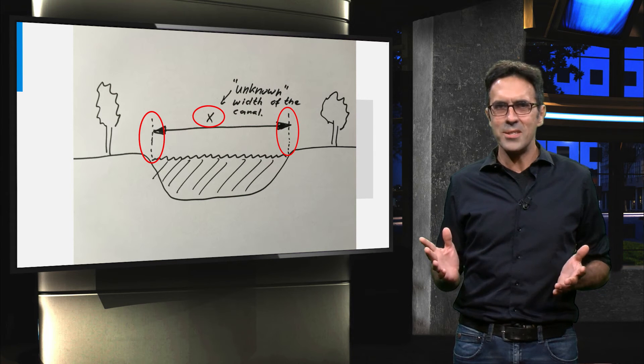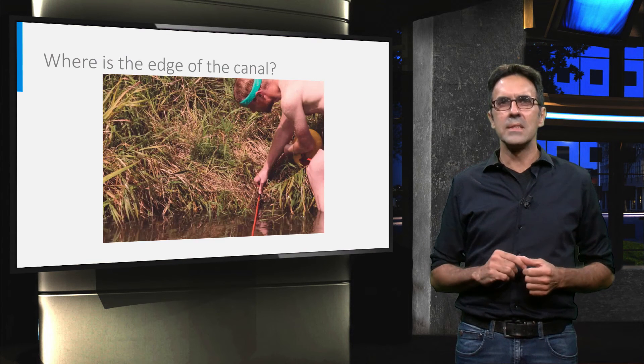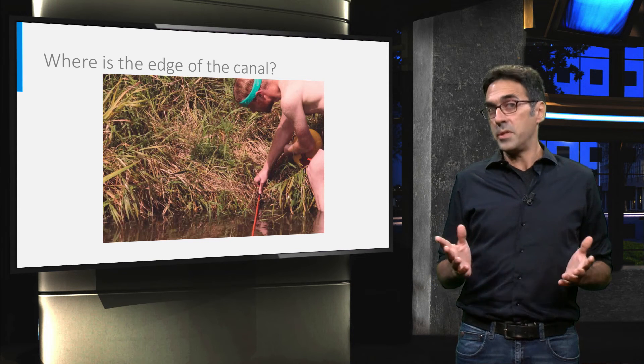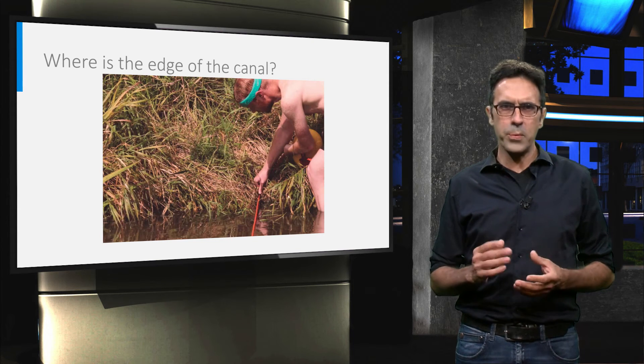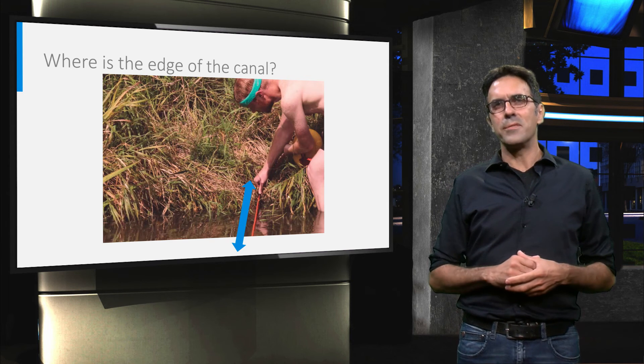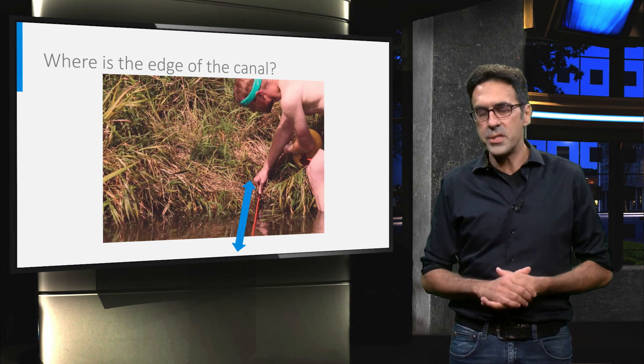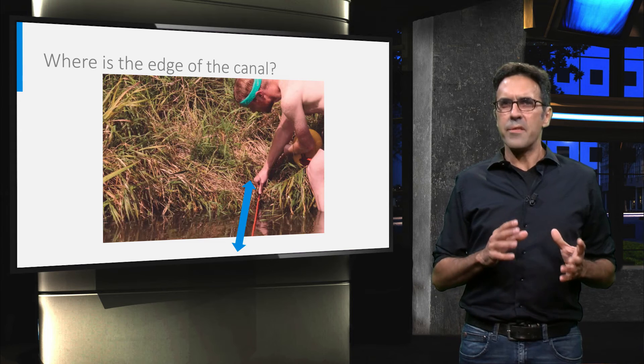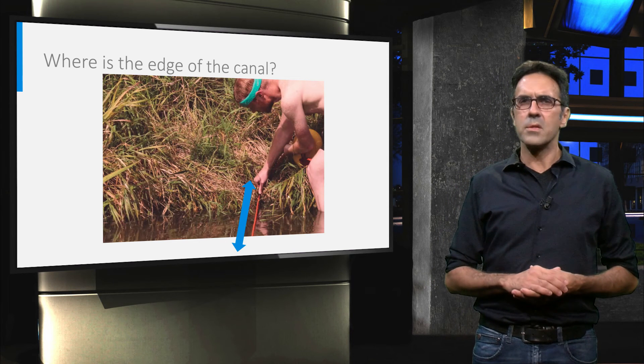In real life this is not so easy. For example, here in this example the unknown width is interpreted by a student, who holds a rope at a position which he considers to be representative. Another person would probably make a different decision. In this example the effect would easily be in the order of several centimeters.